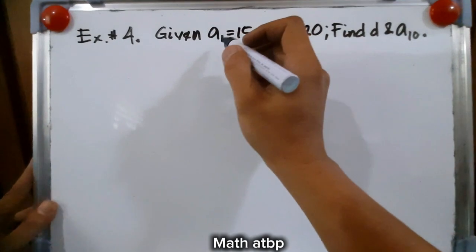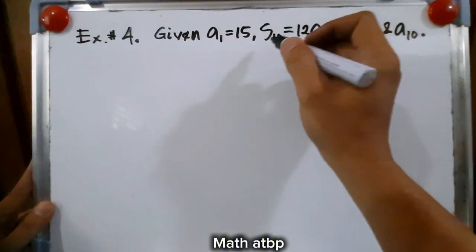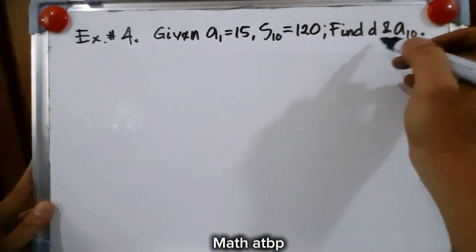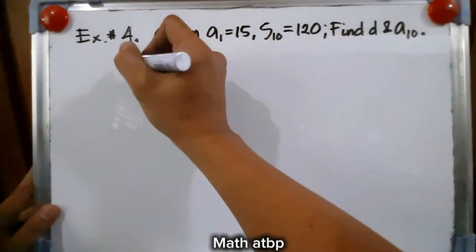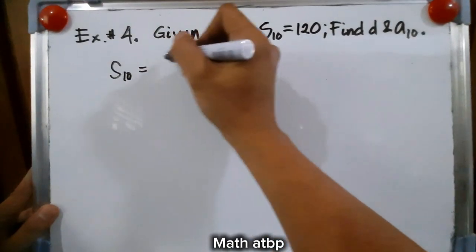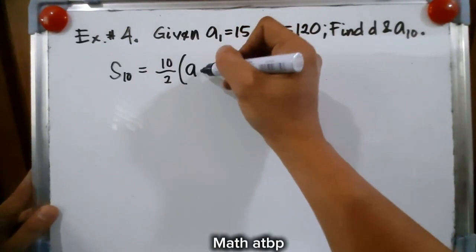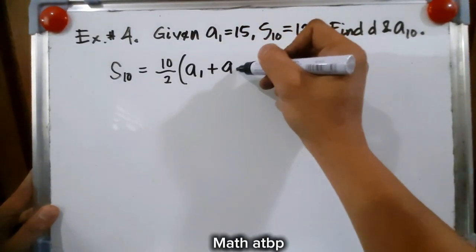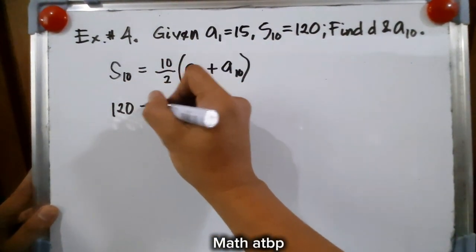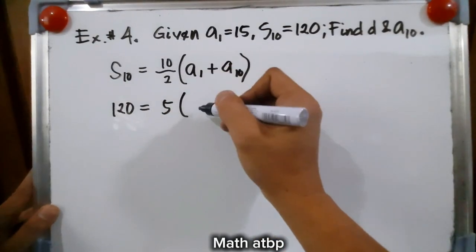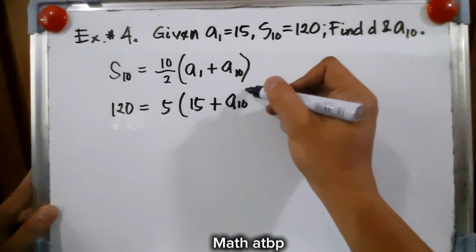Example number 4: given a sub 1, or the first term, is equal to 15, and s sub 10 is equal to 120. This is the sum of 10 terms. Find d and a sub 10, the difference and the 10th term. Let us find the 10th term. We have s sub 10, or the sum of 10 terms, equal to 10 over 2 times a sub 1 plus a sub 10. So s sub 10 is 120 equal to 5 times a sub 1, which is 15, plus a sub 10.